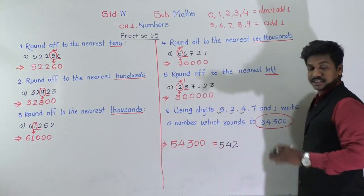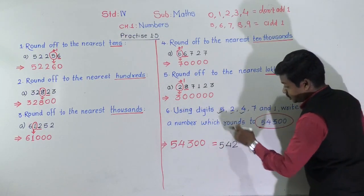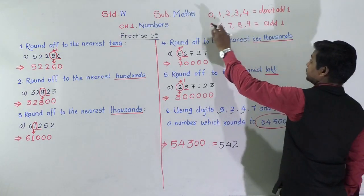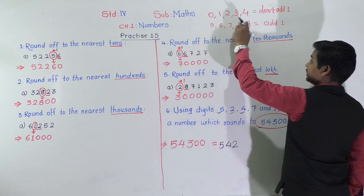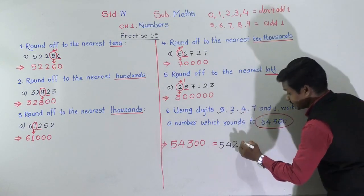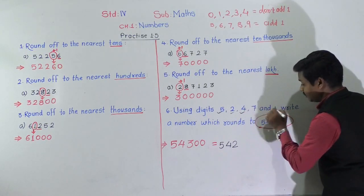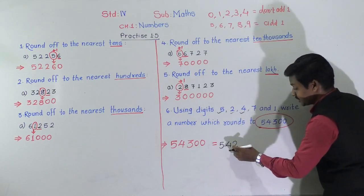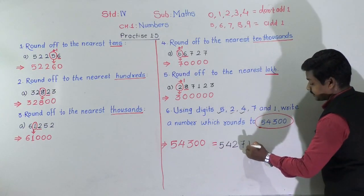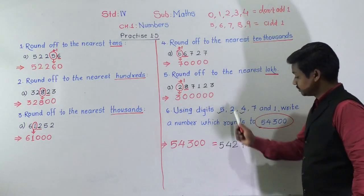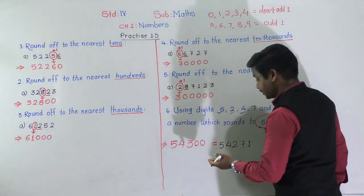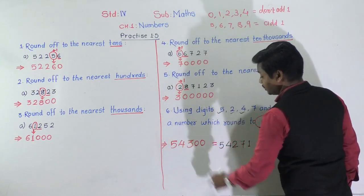Since 2 was rounded by adding 1 to get 3, the next digit after 2 must satisfy the second rule — it must be 5, 6, 7, 8, or 9. From the remaining digits 7 and 1, the digit that satisfies this rule is 7. So 7 comes after 2, and 1 comes at the end. Therefore, the original number is 54,271.